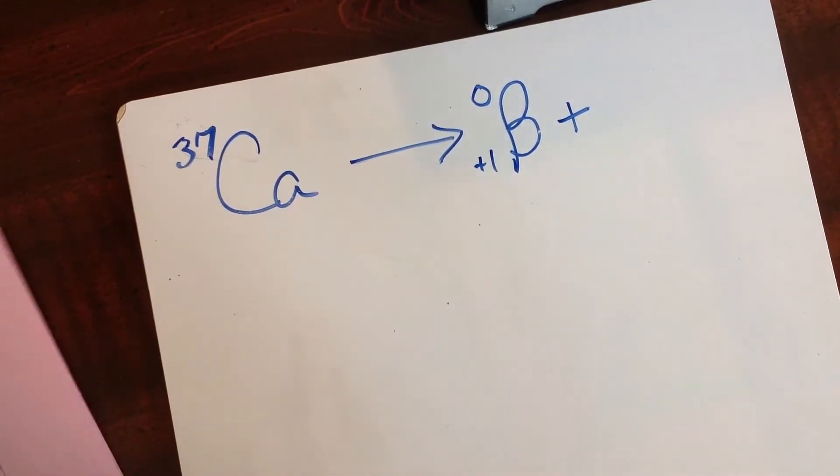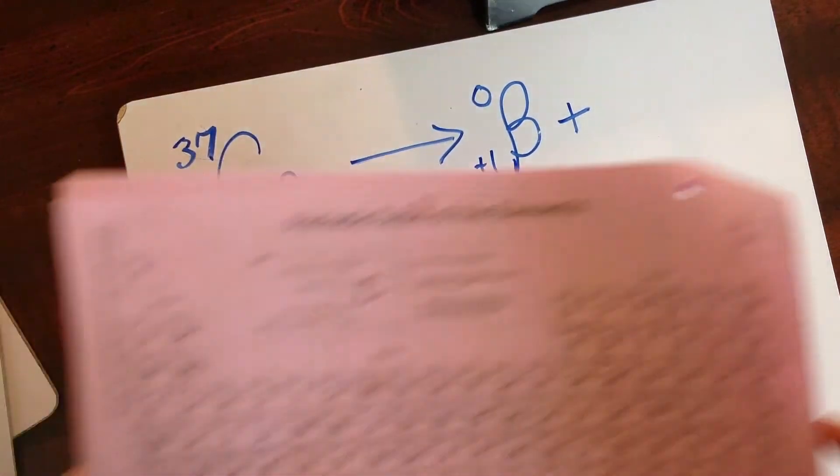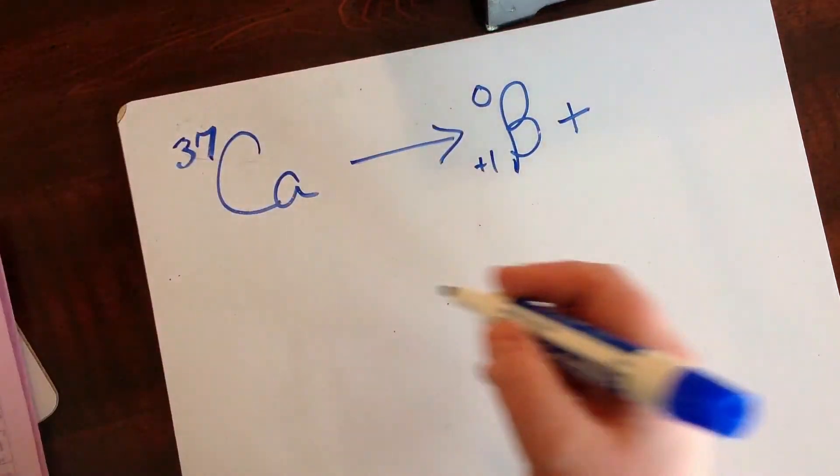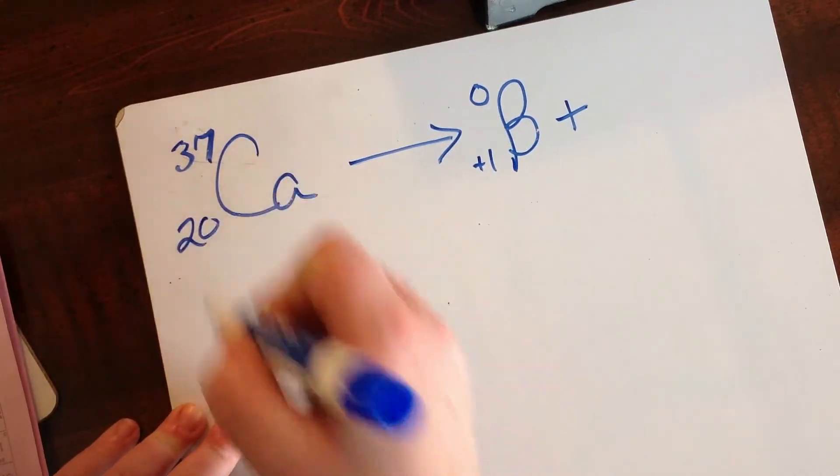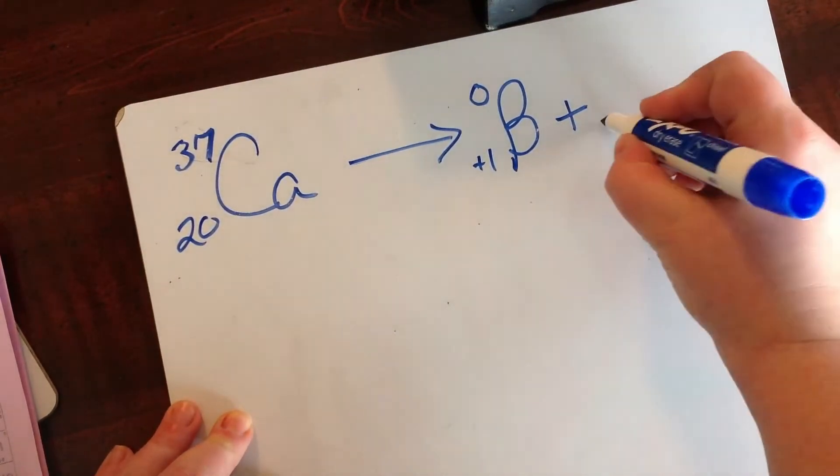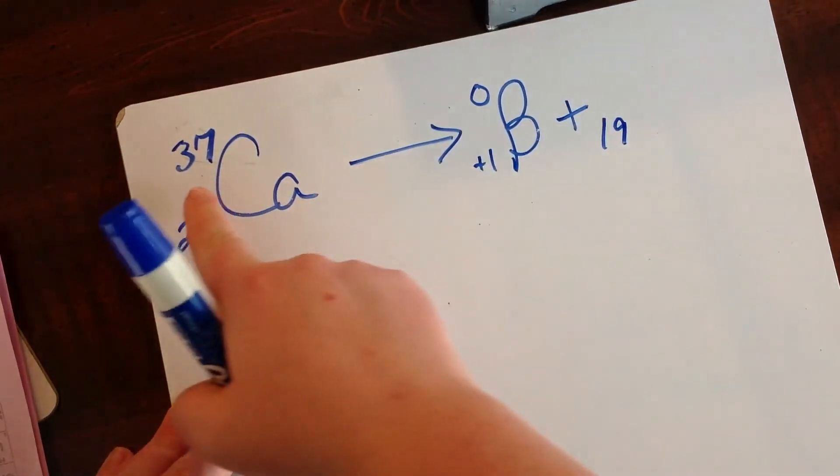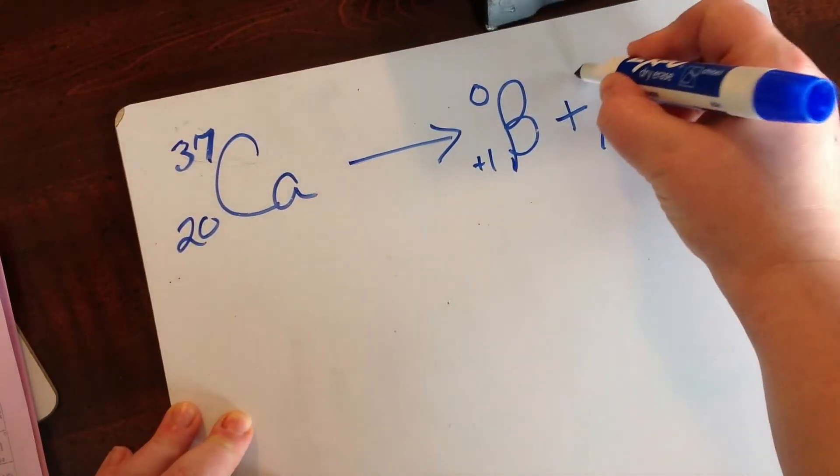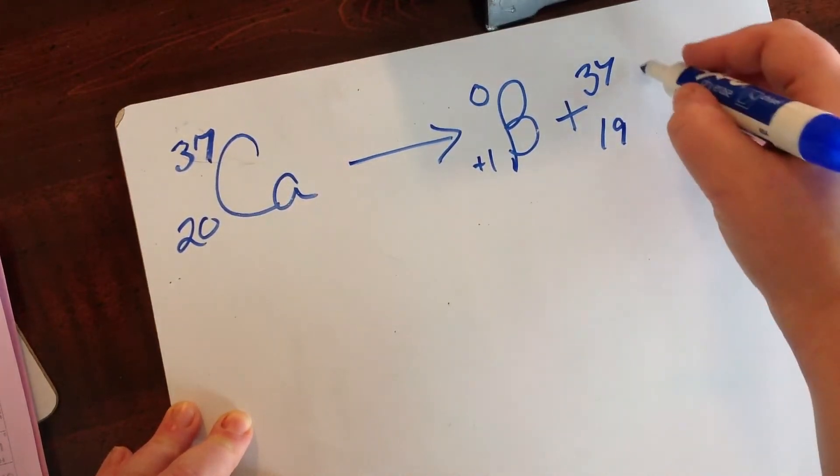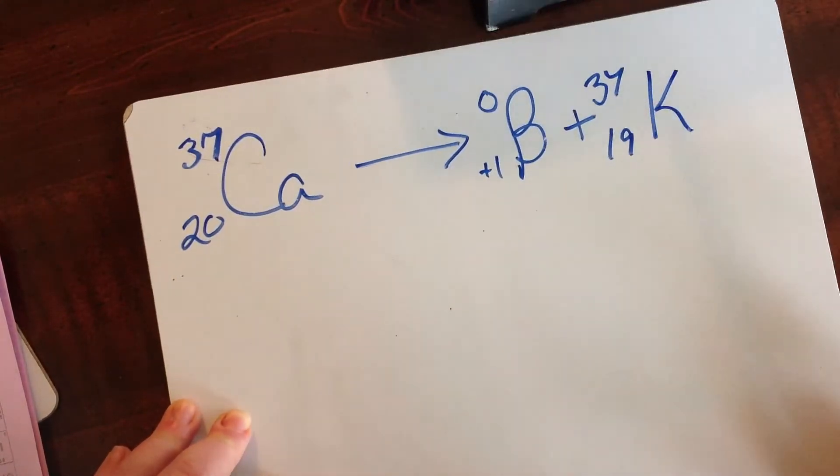And then looking up the atomic number of calcium. The atomic number of calcium is 20. So 20 on the bottom here. 20 equals 1 plus 19. 37 is 0 plus 37. And atomic number 19 is K.